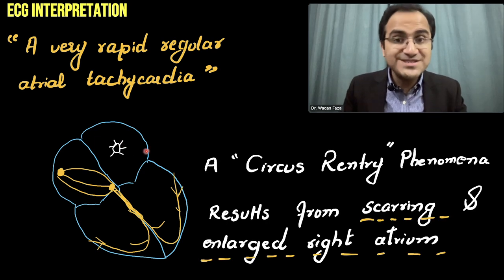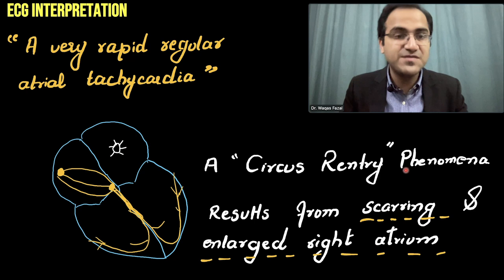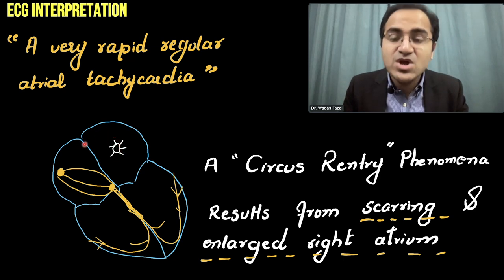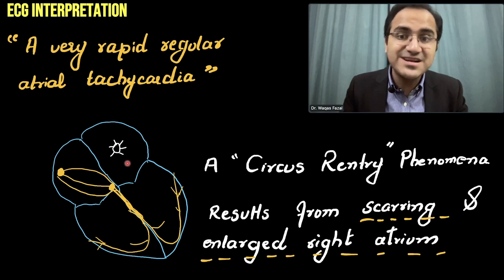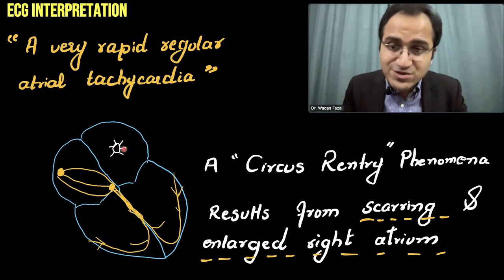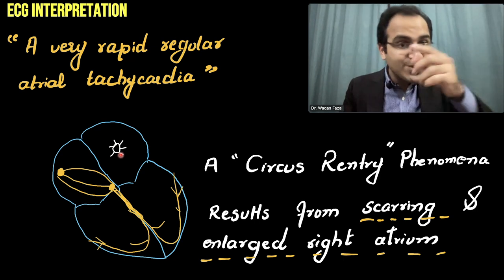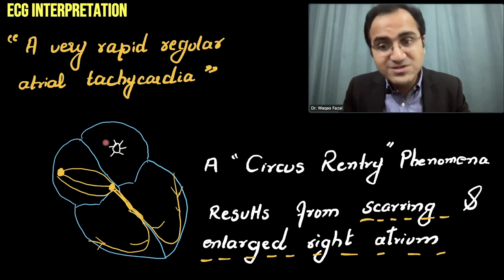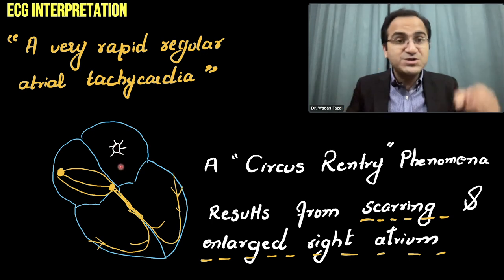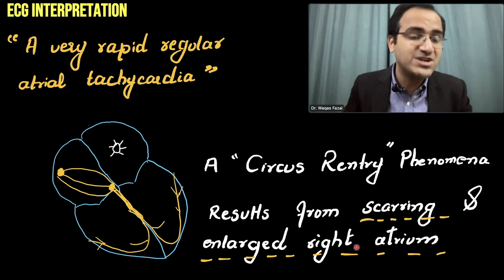What causes this rapid atrial contraction and rapid electrical activity is a phenomenon called circus re-entry. In circus re-entry, the ectopic foci produce electrical currents that travel within the atria causing contractions, then return back to the ectopic focus and stimulate it to produce more currents. This creates a positive feedback loop — a vicious cycle — that causes the rapid contraction resulting from scarring and an enlarged right atrium.